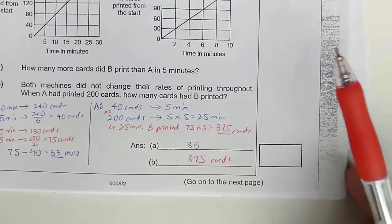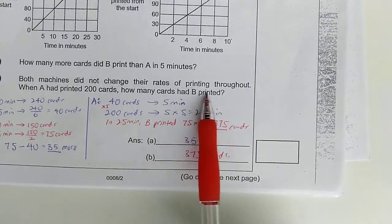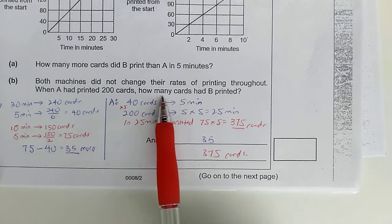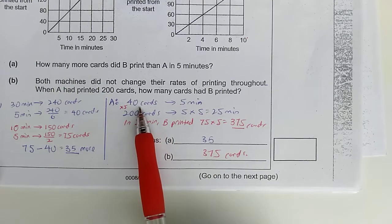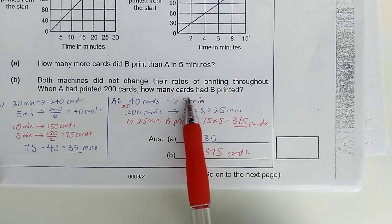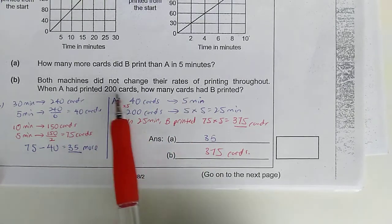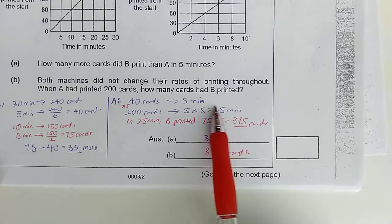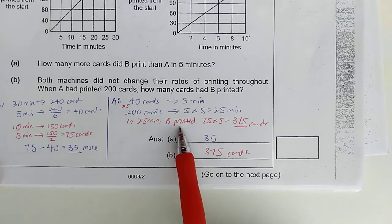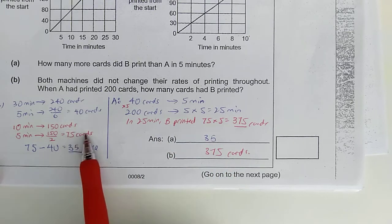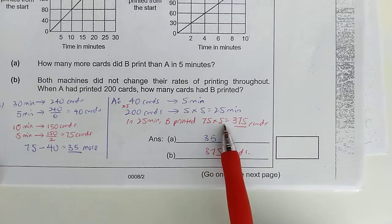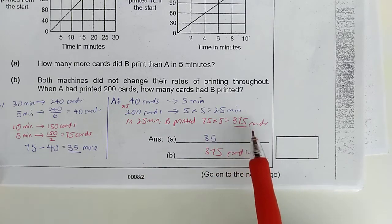Now, then, both machines did not change their rates of printing throughout. So, when A had printed 200 cards, how many cards had B printed? Well, we know that 40 cards were printed by A in 5 minutes. So, 200 cards were printed by A in 25 minutes. So, in 25 minutes, B would print 75. You see, in 5 minutes, it would print 75. So, in 25 minutes, it would print 75 times 5, 375 cards.